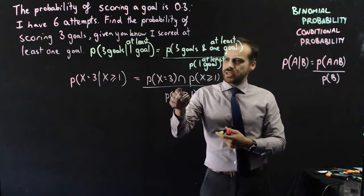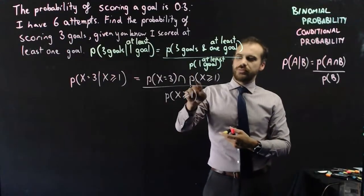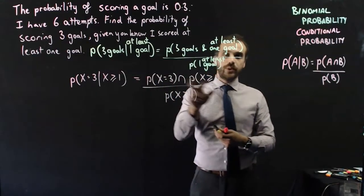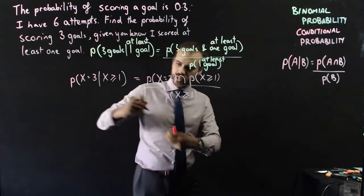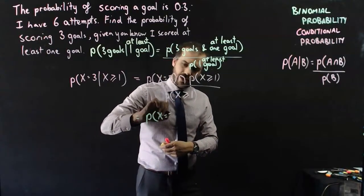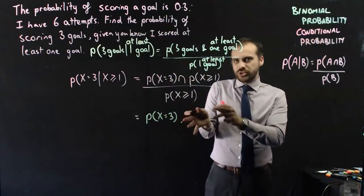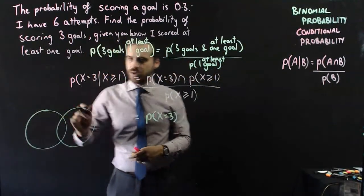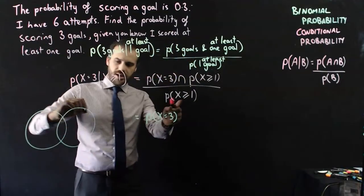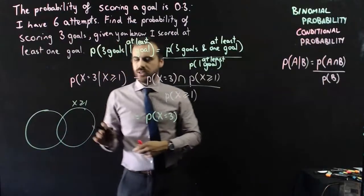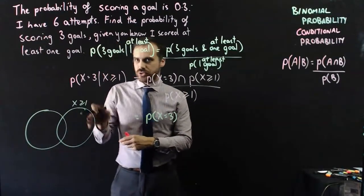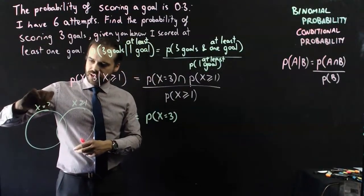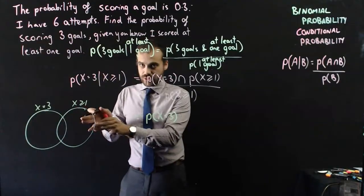The probability that X is equal to three, intersection, probability that X is greater than or equal to one, that is equivalent to just the probability that X is equal to three. Now, it shouldn't be too difficult to see why if I draw a Venn diagram where this Venn diagram is X is greater than or equal to one. That means that there's one goal scored, two goals, three goals, four goals, five goals, and six goals scored. This is the Venn diagram, just X is equal to three. That means three goals is scored.